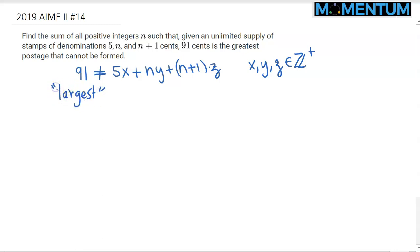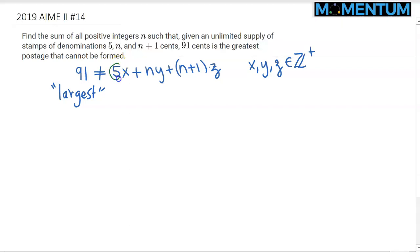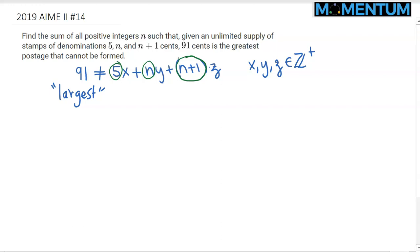How can you combine the fives, the n's, and the n+1's such that 91 is the largest number you cannot hit? Obviously, because 5 is one of your numbers, any multiple of 5 you can hit. 10 you can hit — just use two fives. 5 plus 5 is 10. 15 can be hit: 5 plus 5 plus 5.